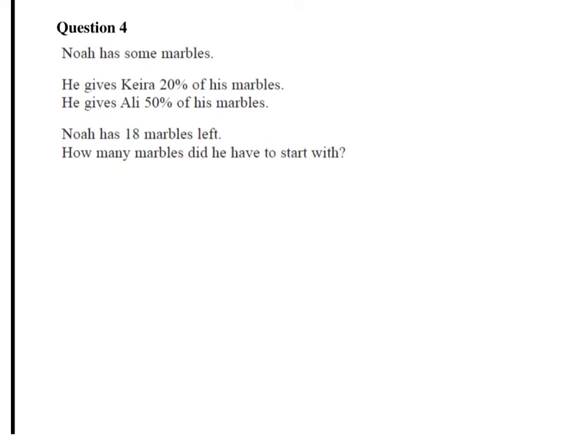What we've got to equate here is the fact that he's given 70% away, so he's got 30% left. So his 30%, what he's left with, equals 18.